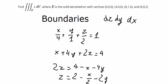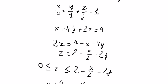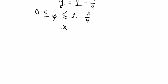For the last boundary, dx, we set y and z equal to 0. This gives us x equal to 4, so the boundary for x should go from 0 to 4.